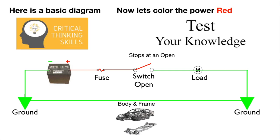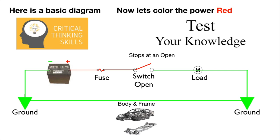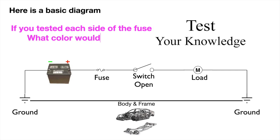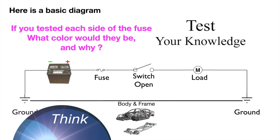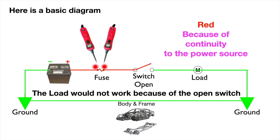Now increasing your critical thinking is always our goal, so let's test your knowledge. If you tested each side of the fuse, what color would they be and why? Well, it would be red on both sides because of continuity to the power source — to and through the fuse — until it stops at an open. The load would not work because of the open switch.